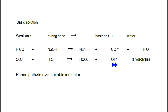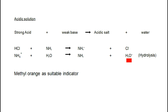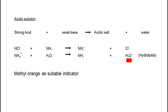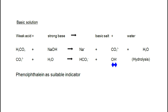In summary: when a strong acid reacts with a strong base, a neutral salt and water are formed — Na⁺ and Cl⁻ ions do not undergo hydrolysis, so bromothymol blue is a suitable indicator. When a strong acid reacts with a weak base, an acidic salt is formed — NH4⁺ ions react with water to form NH3 and H3O⁺ ions, making the solution slightly acidic, so methyl orange is suitable. When a weak acid reacts with a strong base, a basic salt is formed — CO3²⁻ ions react with water to form OH⁻ ions, making the solution slightly basic, so phenolphthalein is suitable.